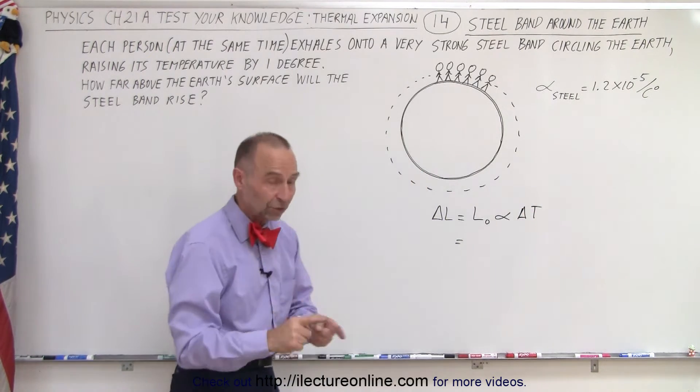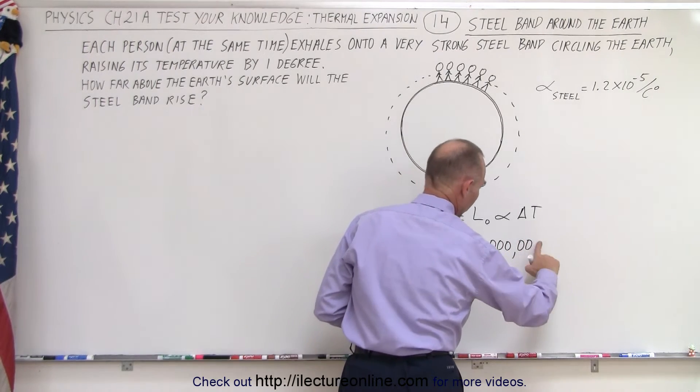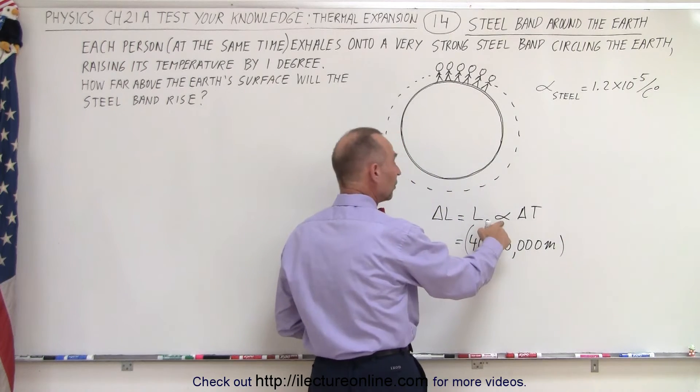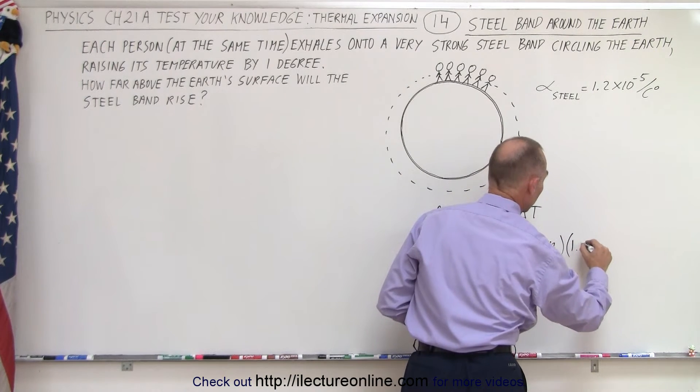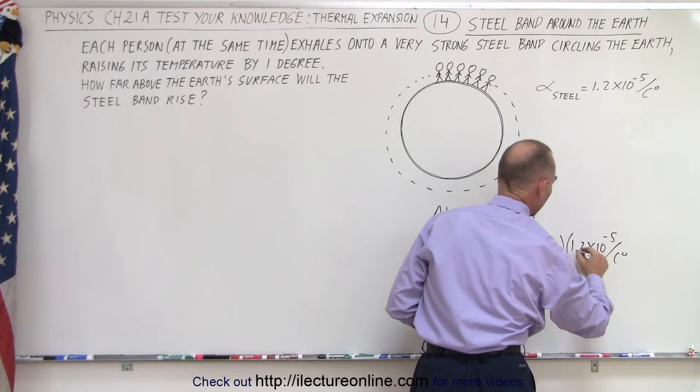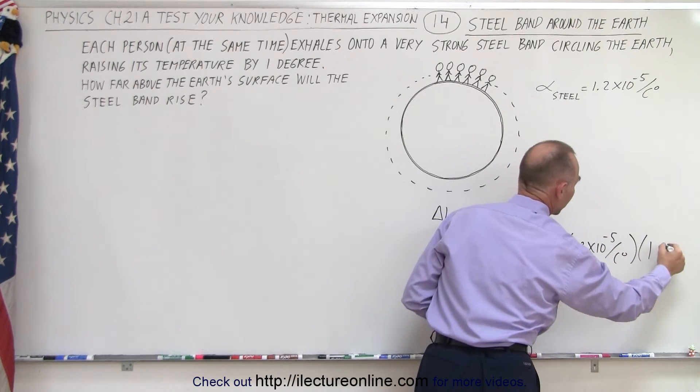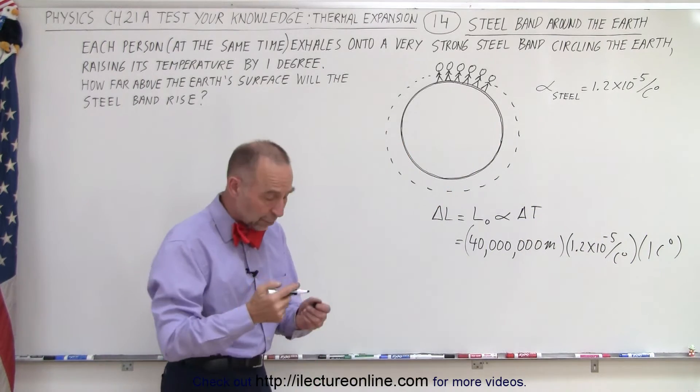So in this case the original length would be the circumference of the earth which is 40 million meters, and then we multiply times 10 to the minus 5 per centigrade degree and multiply times 1 centigrade degree for the rise in the temperature. So that will be the increase in the length.